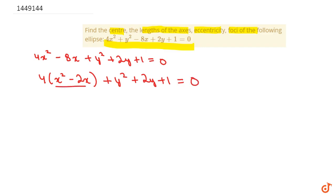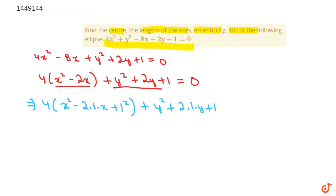Now we will try to write all the terms of x and y in whole square form. Here we have 4 times (x² - 2·1·x), so we add 1² here. And here we have y² + 2·1·y + 1. Because we add 4·1² on the left side, we also add 4·1² on the right side. This gives us 4(x - 1)² + (y + 1)² = 4.